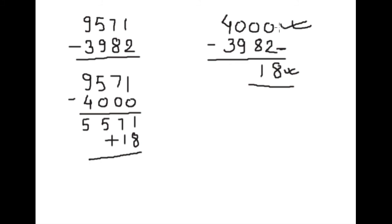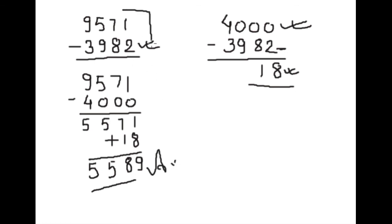We add eighteen because four thousand is eighteen extra than the actual number, giving us one thousand five hundred eighty-nine as the answer. In this way you can subtract using the nearest round figure of the smaller number and get the correct answer very easily in just a few seconds. Keep watching — I will come up with new tricks in my next videos. Thank you for watching, please subscribe and don't forget to press the bell button. Have a nice day!